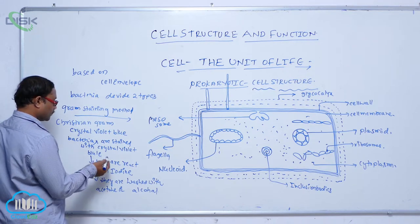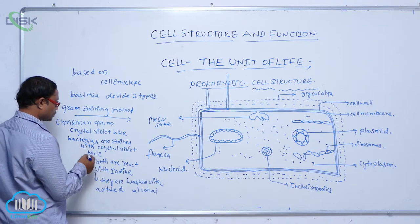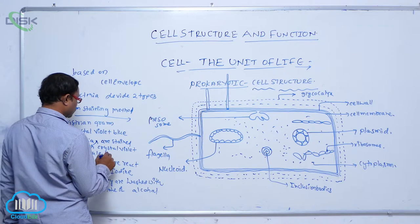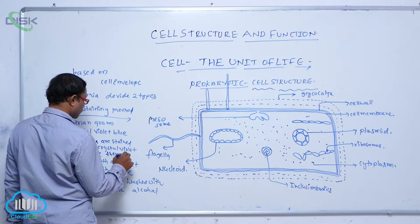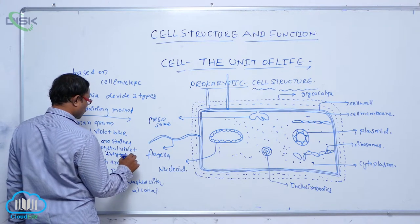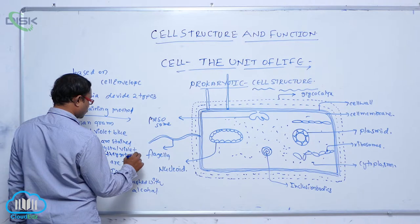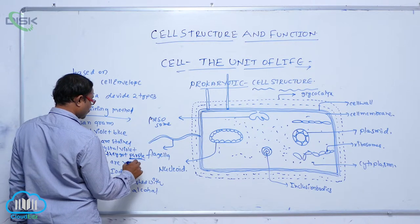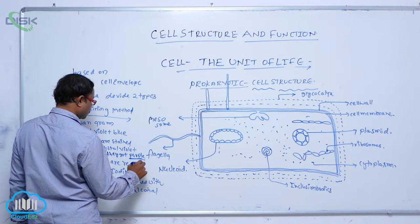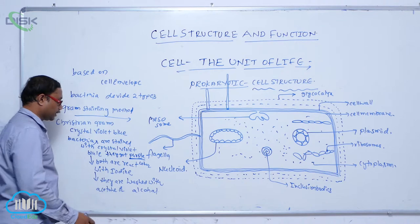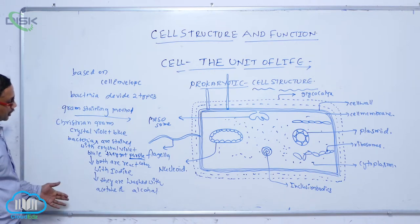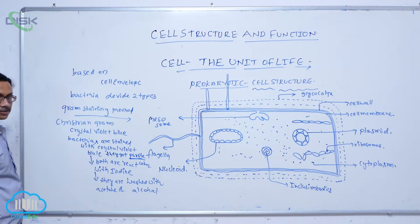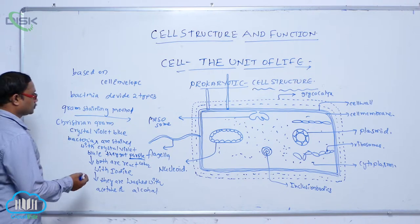After staining with crystal violet blue, the bacteria got a purple or violet color. After that, both react with iodine, and finally they are washed with an alcohol solution.